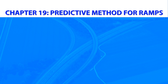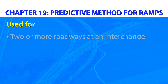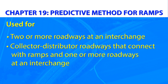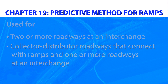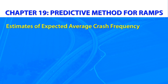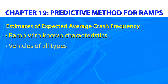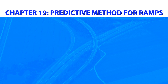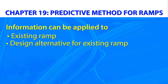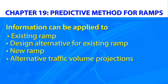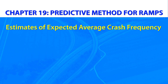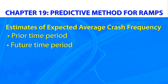Chapter 19, Predictive Method for Ramps, presents the predictive method for ramps used to connect two or more roadways at an interchange. It is also applicable to collector-distributor roadways that connect with ramps and one or more roadways at an interchange. The predictive methodology for ramps provides the structure necessary to estimate the expected average crash frequency for a ramp with known characteristics and involves all vehicle types. It can be applied to an existing ramp, a design alternative for an existing ramp, a new ramp, or for alternative traffic volume projections. And like freeways, estimates can be made of expected average crash frequency for either prior or future time periods.